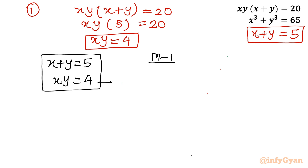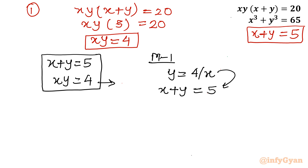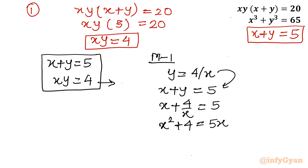From xy = 4, we write y = 4/x. Substituting into x + y = 5 gives x + 4/x = 5. Multiplying both sides by x: x² + 4 = 5x. Taking all terms to the left-hand side: x² - 5x + 4 = 0. This is a quadratic equation, so we apply the quadratic formula.